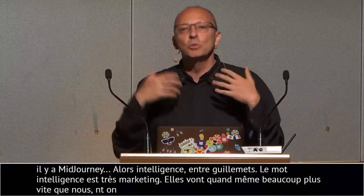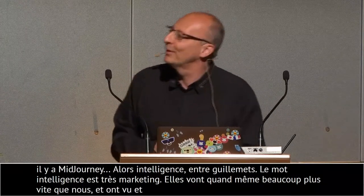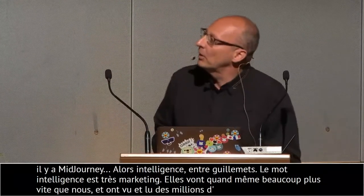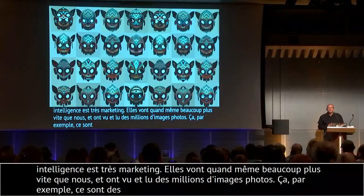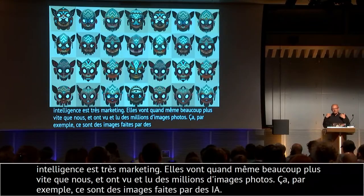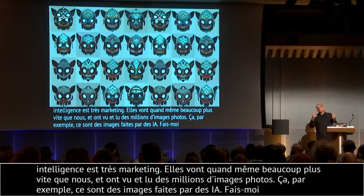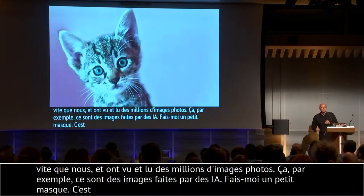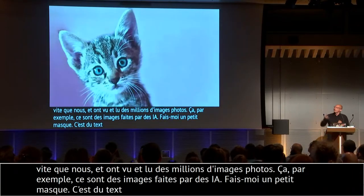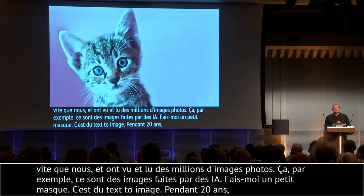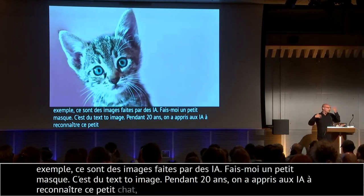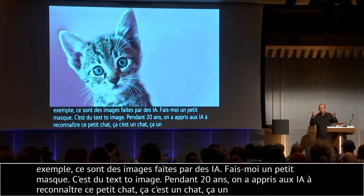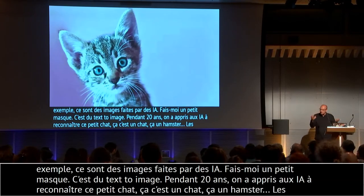Le mot « intelligence » c'est très marketing — justement, elles ne sont pas intelligentes. Mais elles vont beaucoup plus vite que nous et ont vu des milliards d'images de plus que nous. Ces images sont faites par des IA — c'est du text-to-image, l'interface est textuelle. Ce qui s'est passé : pendant 20 ans, on a appris aux IA à reconnaître des images — ça c'est un chat, ça c'est un chien, ça c'est une voiture. Vous avez les CAPTCHAs en ce moment. La reconnaissance de texte, la traduction — il y a eu un bond depuis 2-3 ans, par exemple avec DeepL.